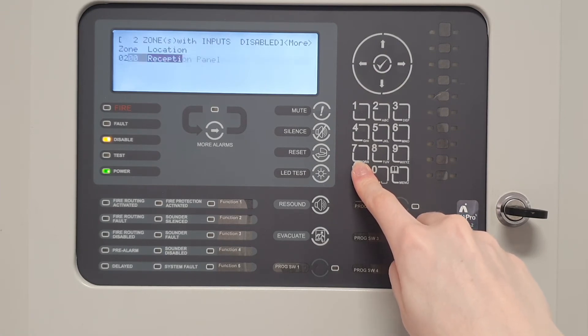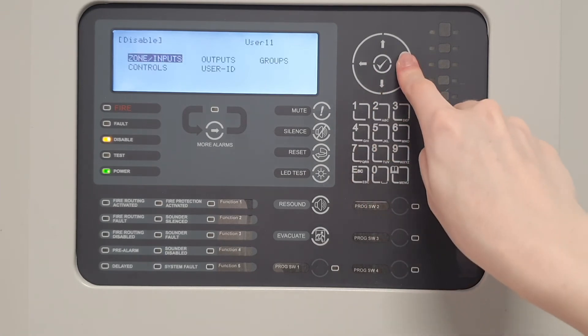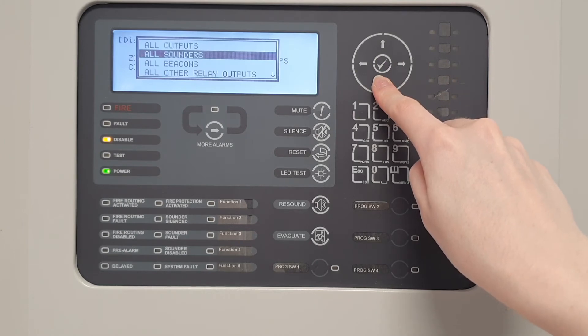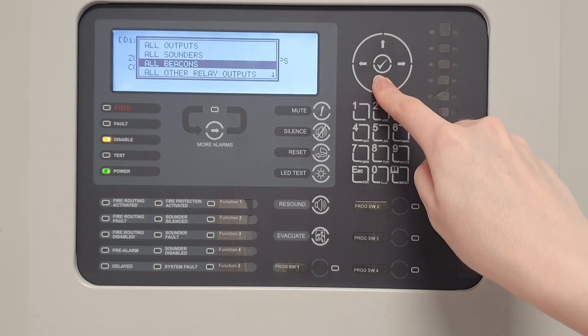To disable outputs, select outputs from within the disable menu, then select which outputs from the list. Selecting all outputs will disable all sounders, beacons and relays. Selecting all sounders will only disable sounder style outputs. Selecting all beacons will disable all beacons. And selecting all other relay outputs will disable all relays on the system.